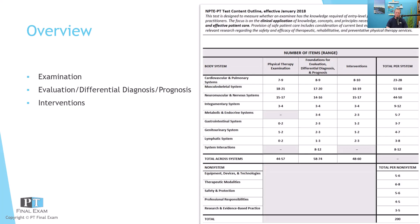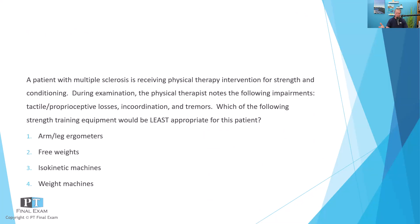So without further ado, let's go through our practice question, related to the neuromuscular and nervous system interventions — the second largest system on the exam, with around 50 questions related to the neuro system. Here is your question: A patient with multiple sclerosis is receiving physical therapy intervention for strength and conditioning. During examination, the physical therapist notes the following impairments: tactile/proprioceptive losses, incoordination, and tremors. Which of the following strength training equipment would be least appropriate for this patient?